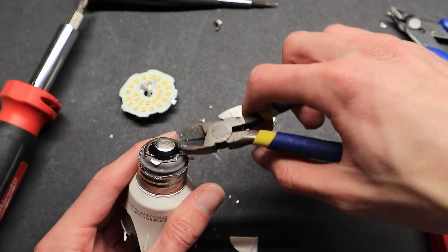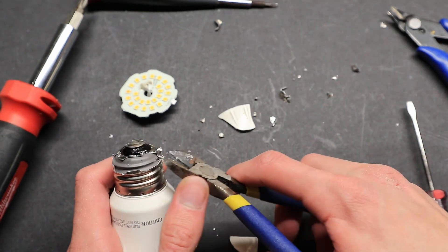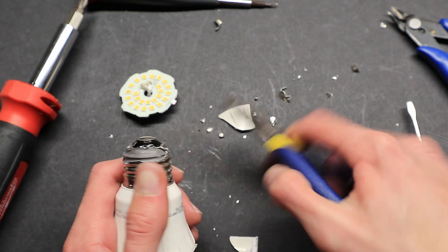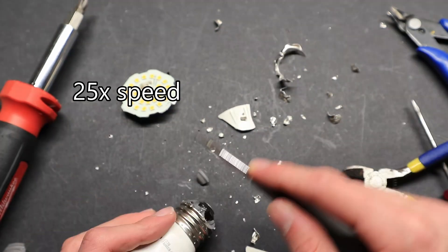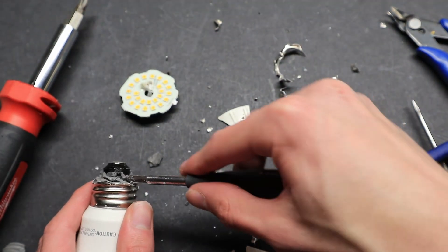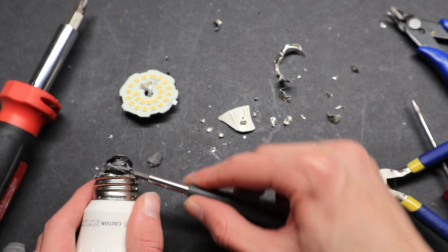This insulator piece is actually made of glass this time, not plastic, surprisingly. I don't want to get broken glass everywhere, so I've got to be sort of careful.